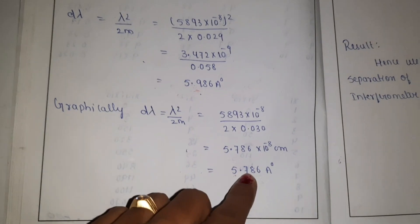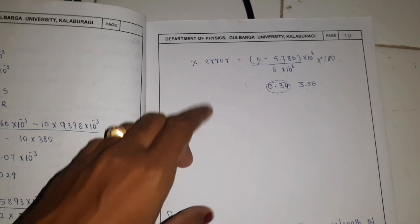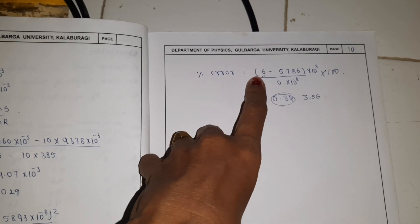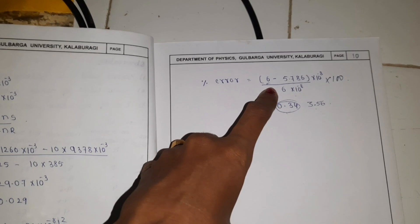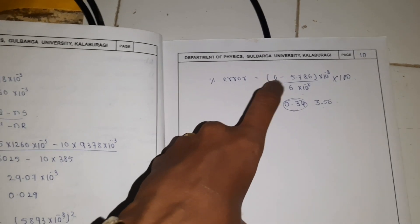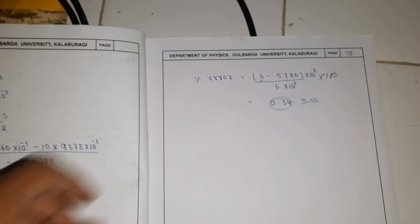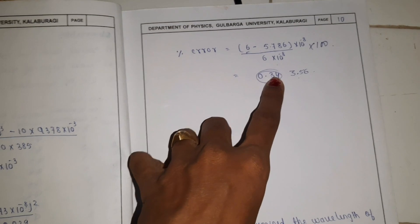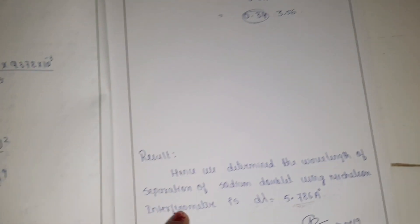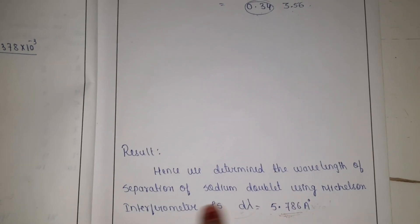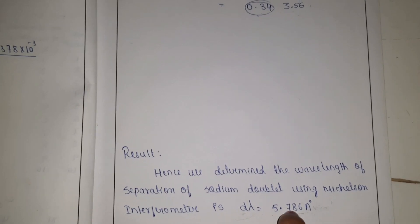Graphically, you get 5.7 Å, and theoretically 5.9 Å. The percentage error is calculated as: (standard value minus experimental value) divided by standard value. The two sodium wavelengths are 5890 Å and 5896 Å, giving a standard difference of 6 Å. With the experimental value of 5.7 Å, the percentage error is around 3%. The result: the wavelength separation of the sodium doublet using the Michelson interferometer is 5.7 Å, which is close to the standard value of 6 Å.